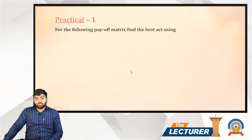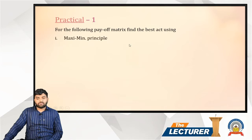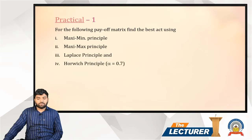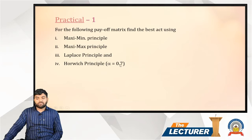For the following payoff matrix, find the best act using: first, the Maximin principle; second, the Maximax principle; third, the Laplace principle; and fourth, the Hurwicz principle. The alpha value given in the question is 0.7.